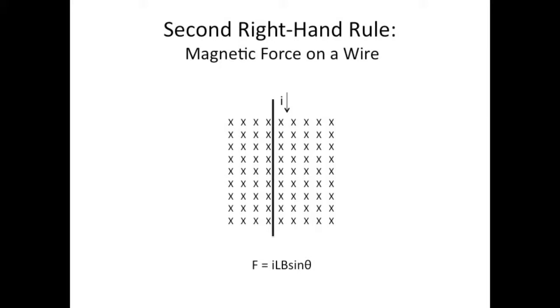So when you do this, your index finger always points in the direction of the magnetic field. And for the second rule in particular, your thumb points just like it does for the first rule, it points in the direction of the current. In this case, that's down. And you can't see my thumb in this picture for that reason. It's the top down view.